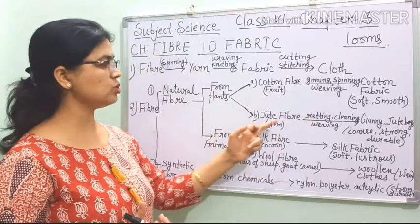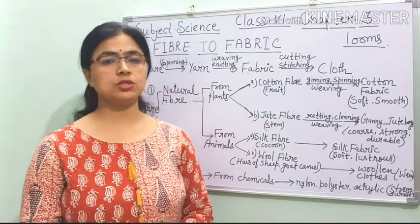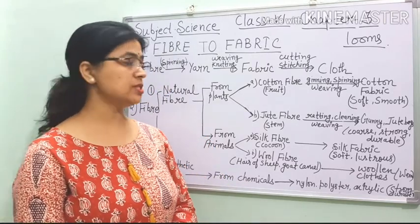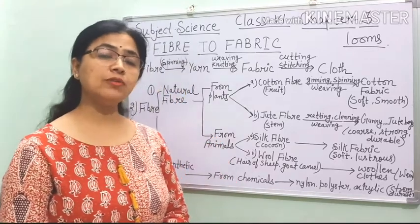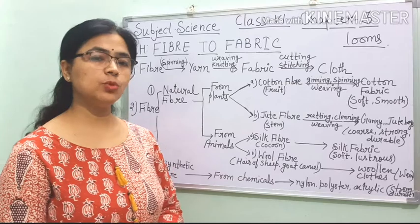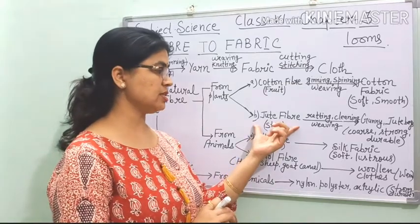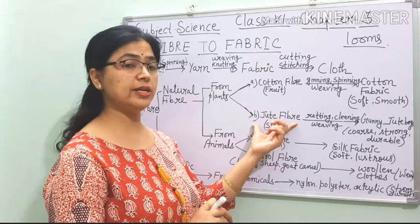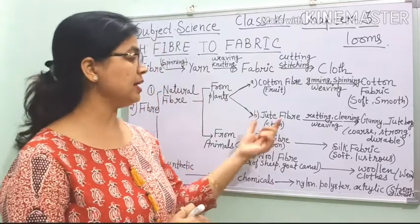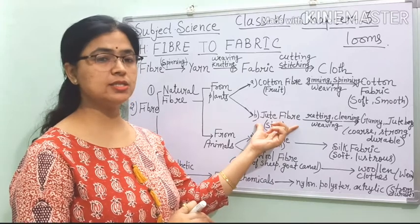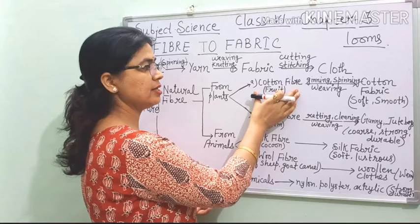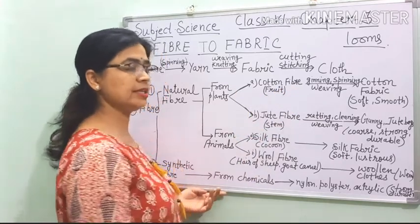Now the jute fibre. We get jute fibre from the stem of the jute plant. We immerse the jute stem into water for a few days, and after rotting, we take it out and remove the fibre. Rainy season is a very good season for jute cultivation. The states in India where jute cultivation occurs are West Bengal, Assam, and Bihar — and the main state is West Bengal.